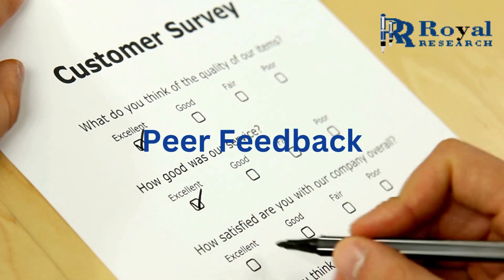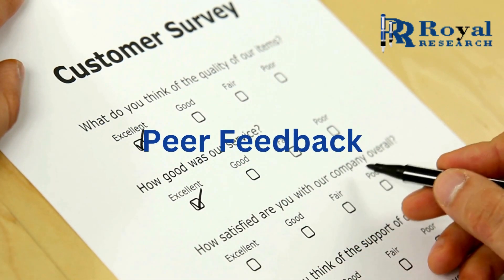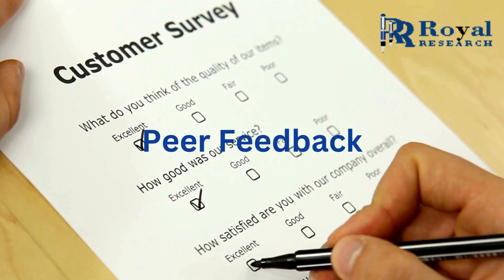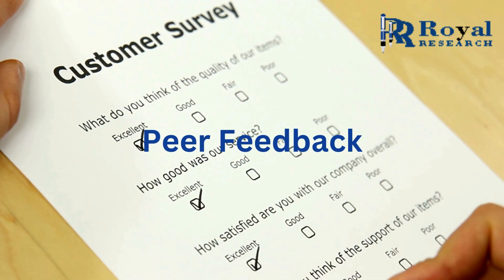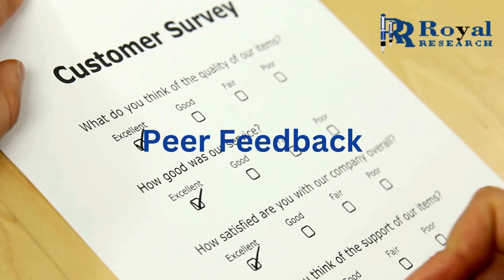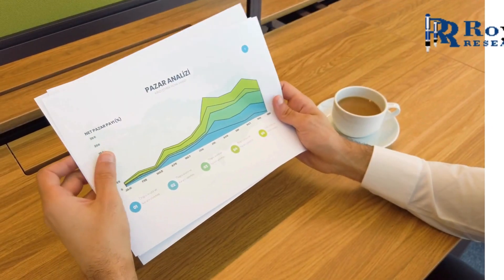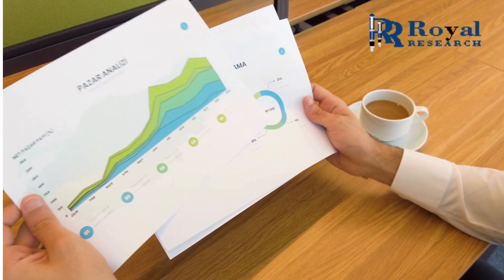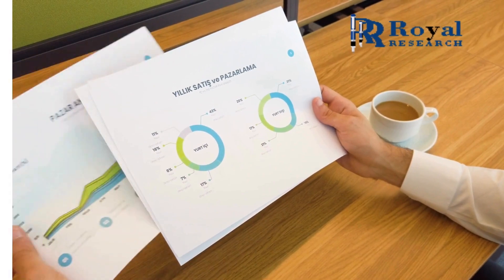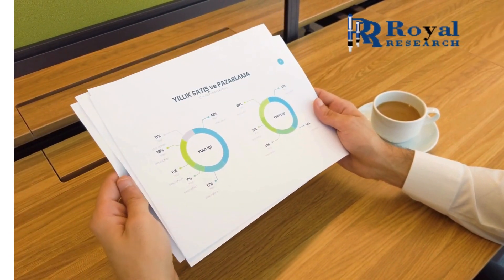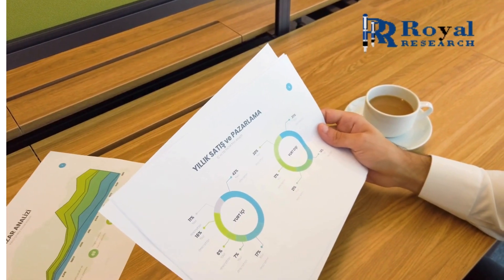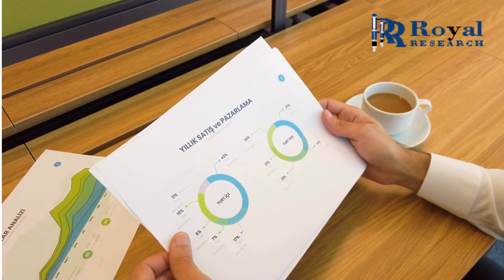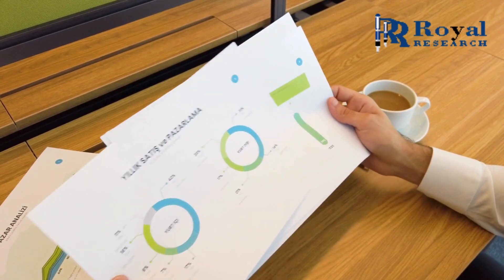Peer feedback: Colleagues and peers who work closely with the individual provide feedback based on their observations. This can include assessments of teamwork, communication skills, collaboration, and other interpersonal aspects of performance.